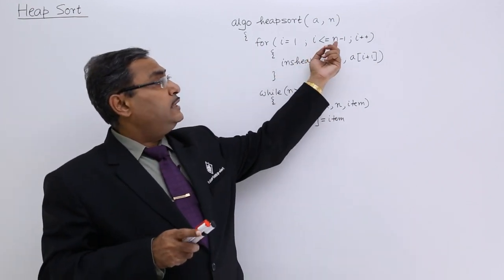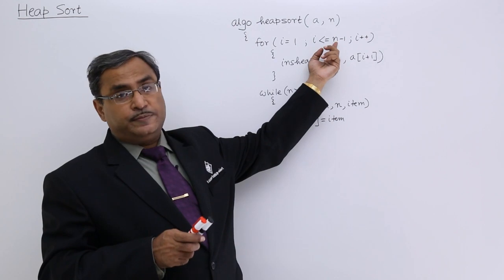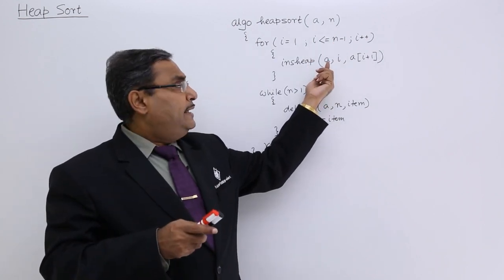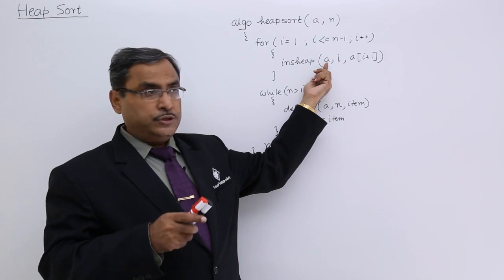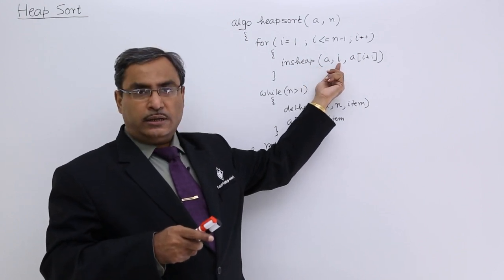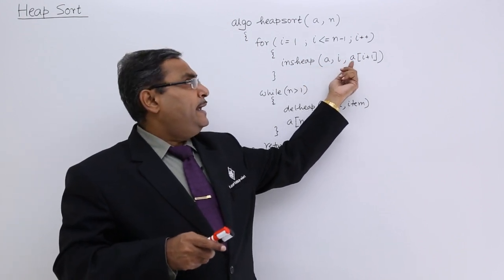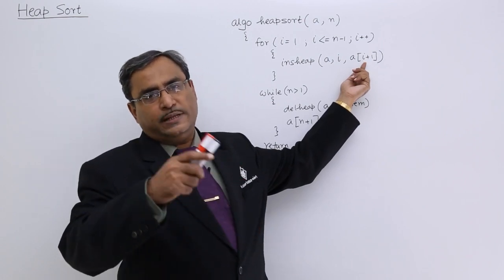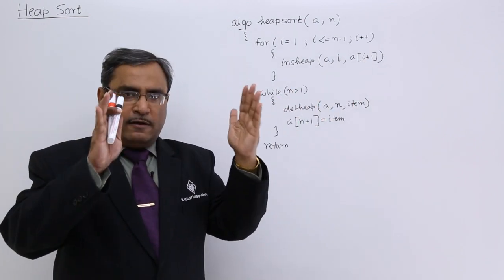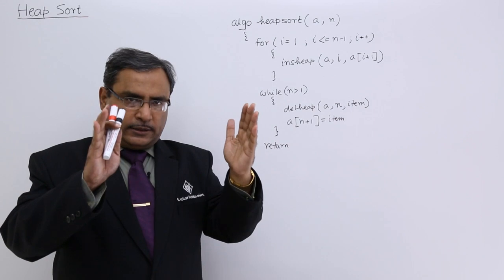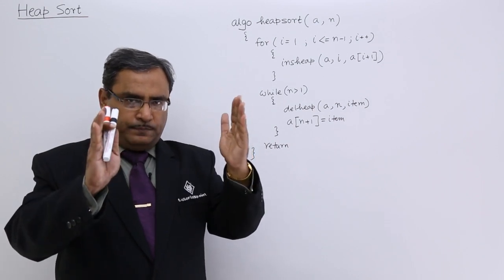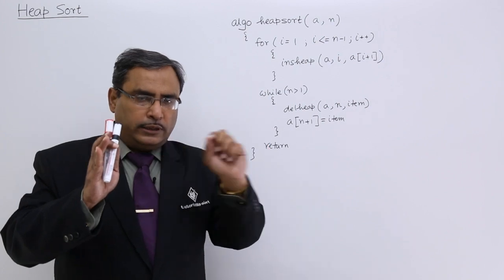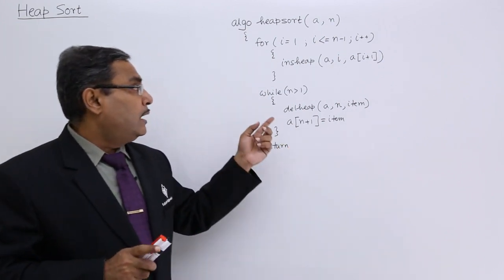What will be the last value? The last value of i is n minus 1. So at the last iteration, the heap tree is formed up to location n minus 1, and A[n] — that is, the nth data — will be the item to be inserted. So ultimately we get the full array from location 1 to n in array A in the form of a heap tree, with all data addressed.